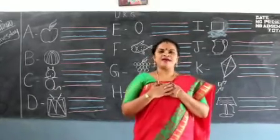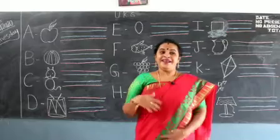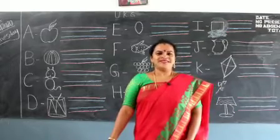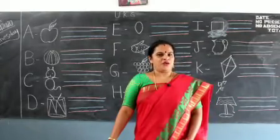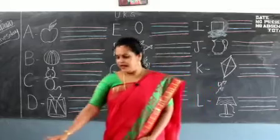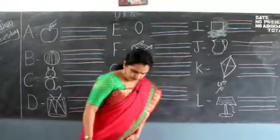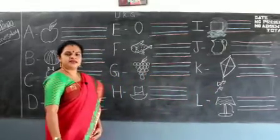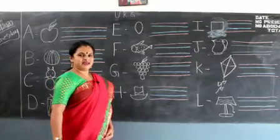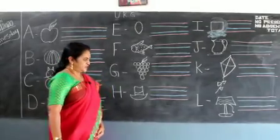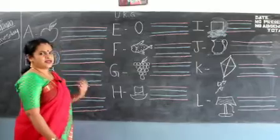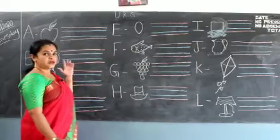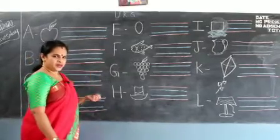Now I know my ABC. Next time won't you sing with me? I hope you all know your ABCD now. How many letters are there in alphabets? Yes, 26 letters. So once we learn all the letters, now we are able to write words.